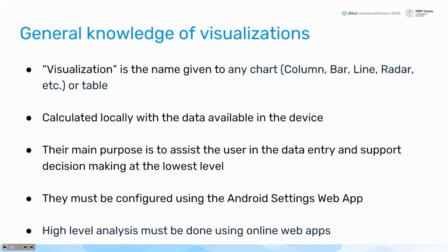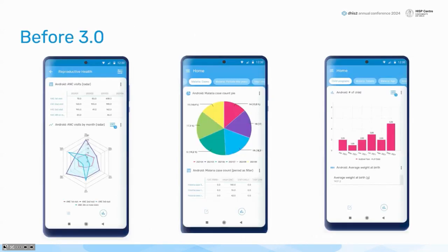If you don't have data in your devices, you won't be able to use these applications. As Scott showed, it's a chart the user can use to check if the data is OK or if changes need to be made. The main objective is to support the user in data entry and support decision-making at the lowest level. We must configure these using the Android settings in the web application. I'll show you how this works in a moment.